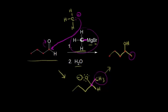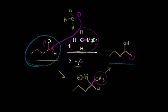Notice that when you start with an aldehyde, you end up with a secondary alcohol — the carbon bonded to the OH is bonded to two other carbons. So an aldehyde gives a secondary alcohol with a Grignard reaction.